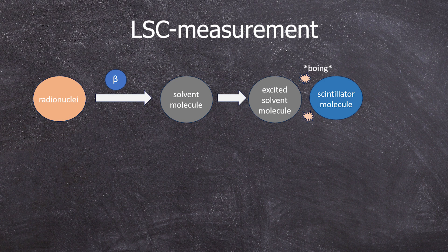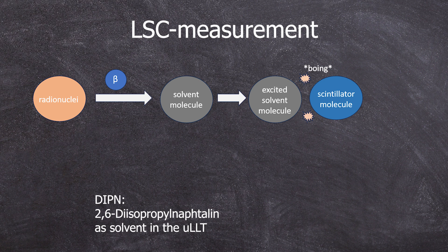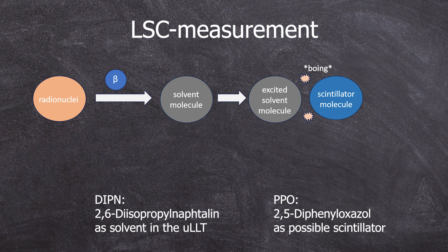Now I can directly answer why tray delay is so important. A measurement in the LSC only works if a particle decays, excites a solvent molecule, and this excited solvent molecule then collides with a scintillator molecule, transferring its energy to it. The scintillator then emits this excess energy in the form of light, which can be measured as a signal.